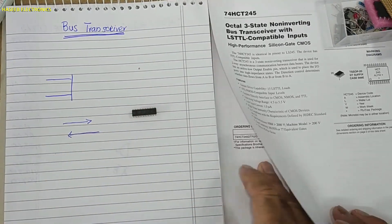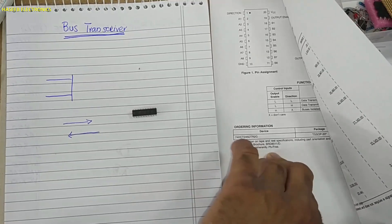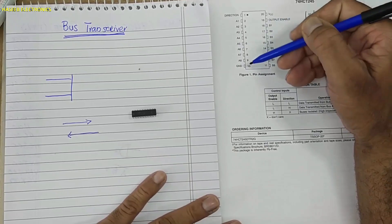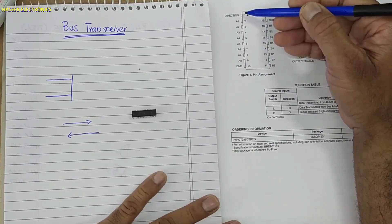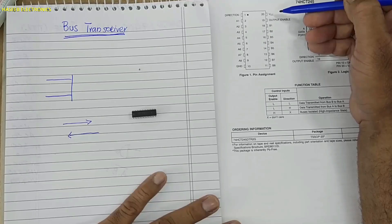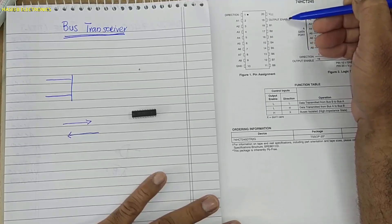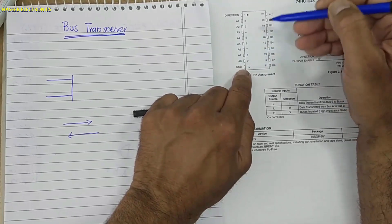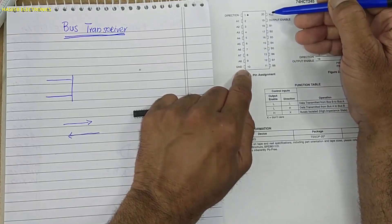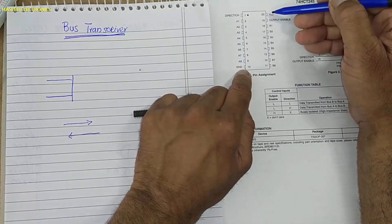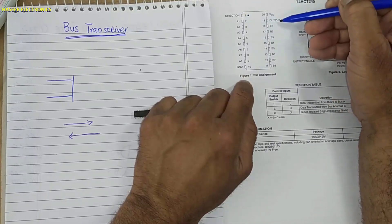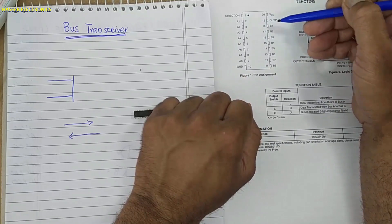20-pin TTL IC logic IC. VCC pin 10, ground pin 20. Pin 1 is direction input, pin number 19 output enable. Pin 10 ground, pin 20 VCC. These are supply pins.